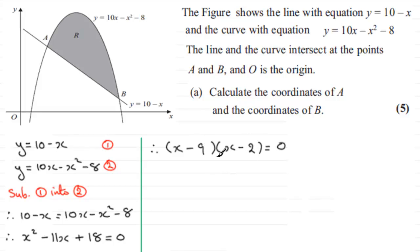That means that either one of these factors or both could equal 0. So therefore, the factor x minus 9 could equal 0 or the other factor, x minus 2, that could equal 0. If we add 9 to both sides here, we end up with x equaling 9. Or if we add 2 to both sides here, x would equal 2.